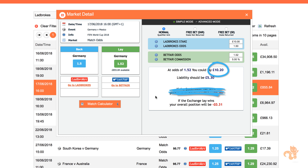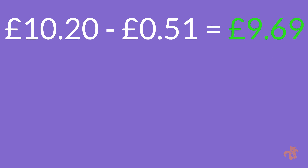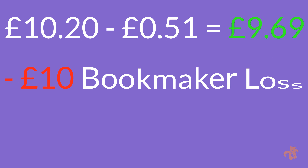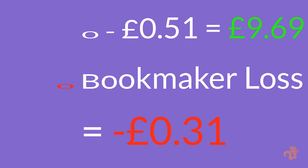When your lay bet wins in the exchange, the exchange will charge a small commission. In this example, using the Betfair exchange, that's 5%. So we win £10.20 minus 51p — the 5% commission — equals £9.69. Then we subtract the £10 we lost on the bookmaker back bet, giving us a final qualifying loss of 31p.